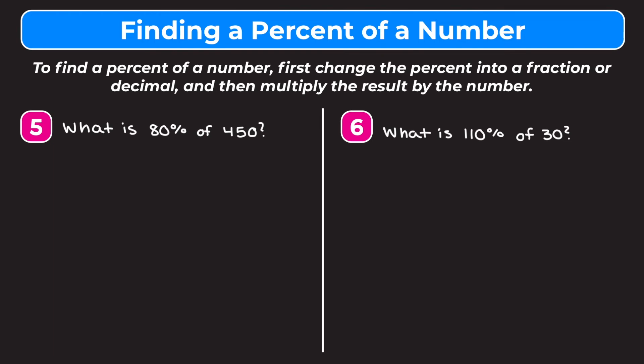Let's work through two more examples. I encourage you to pause the video and try them on your own, then watch me work through them to check. For example 5: what is 80% of 450? We translate this into an equation. X is our variable, 'is' means equals. We change 80% into a decimal by moving the decimal point two places to the left, giving us 0.8. 'Of' is multiplication and 450 is a number, so we keep it as is. Now we multiply 0.8 by 450.